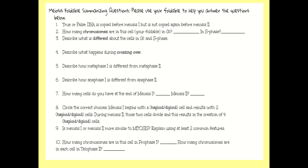The first question said true or false: DNA is copied before meiosis 1 but is not copied again before meiosis 2. You should have said that is a true statement. The reason being if we recopied the genetic material before meiosis 2, then we're not going to be able to keep the chromosome number in half.